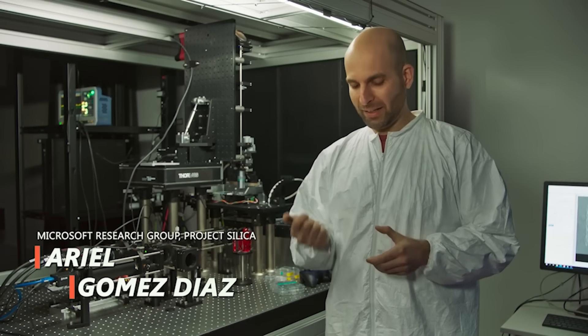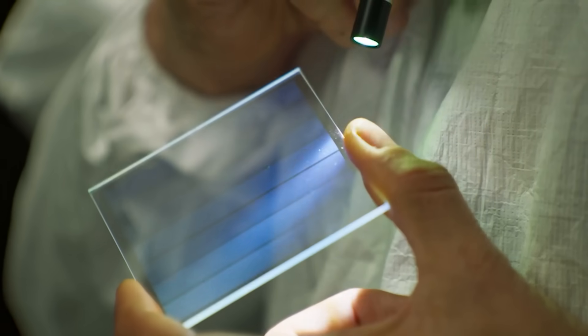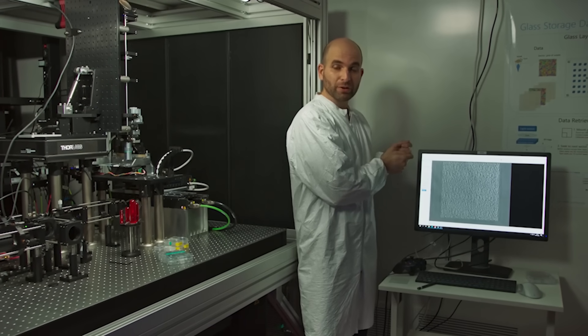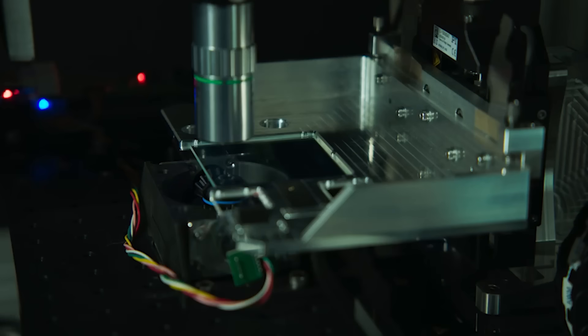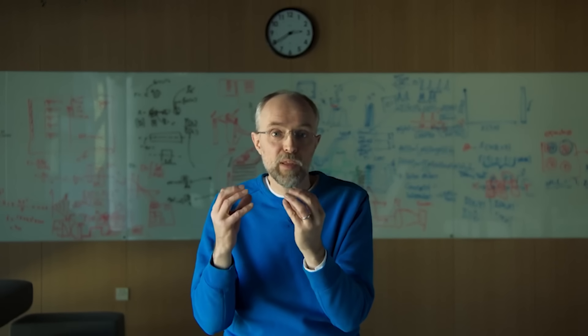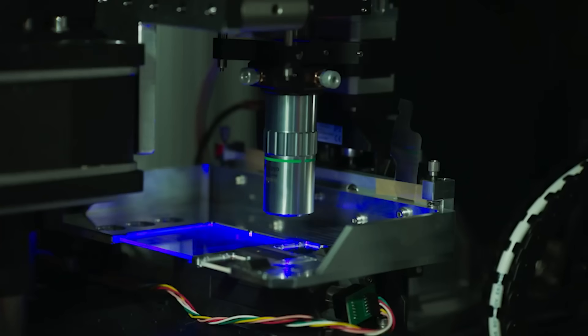This is where our data in the glass is read. We have a live feed here of how the voxels look once we find them. A reader is really a computer-controlled, very high-speed, very accurate microscope. We can move the piece of glass very rapidly to the area where it contains the data we want to read.